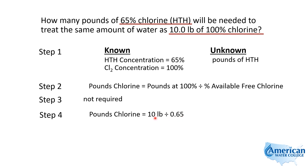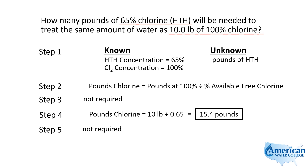If I divide 10 pounds of chlorine by 0.65, which is our available free chlorine in the HTH, that will tell me how many pounds of HTH I need. So 10 divided by 0.65 is 15.38 pounds, or about 15.4 pounds.